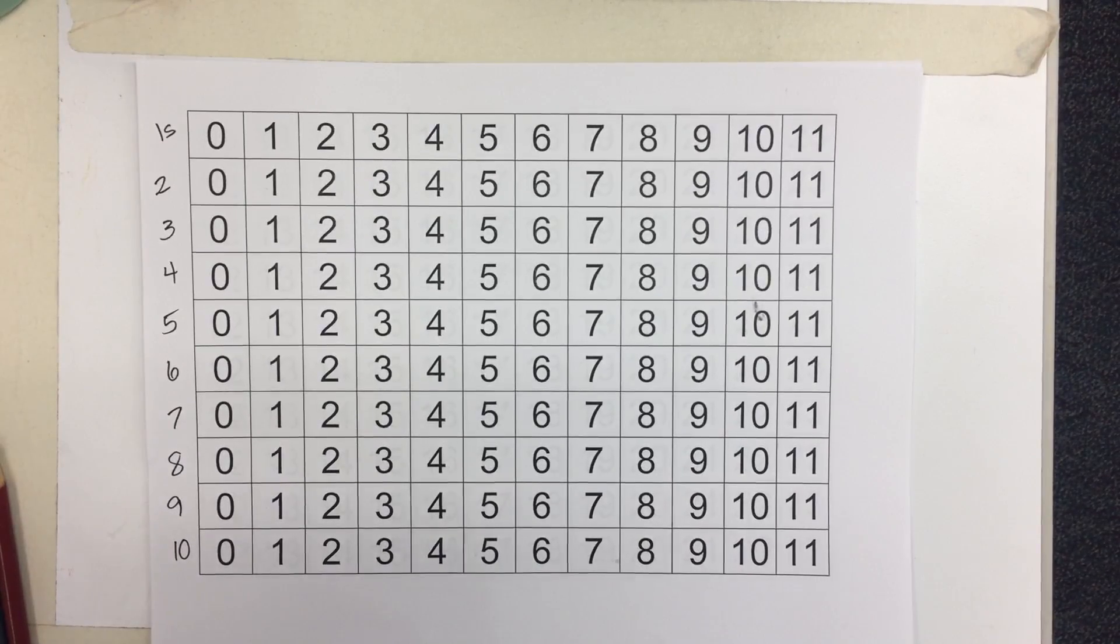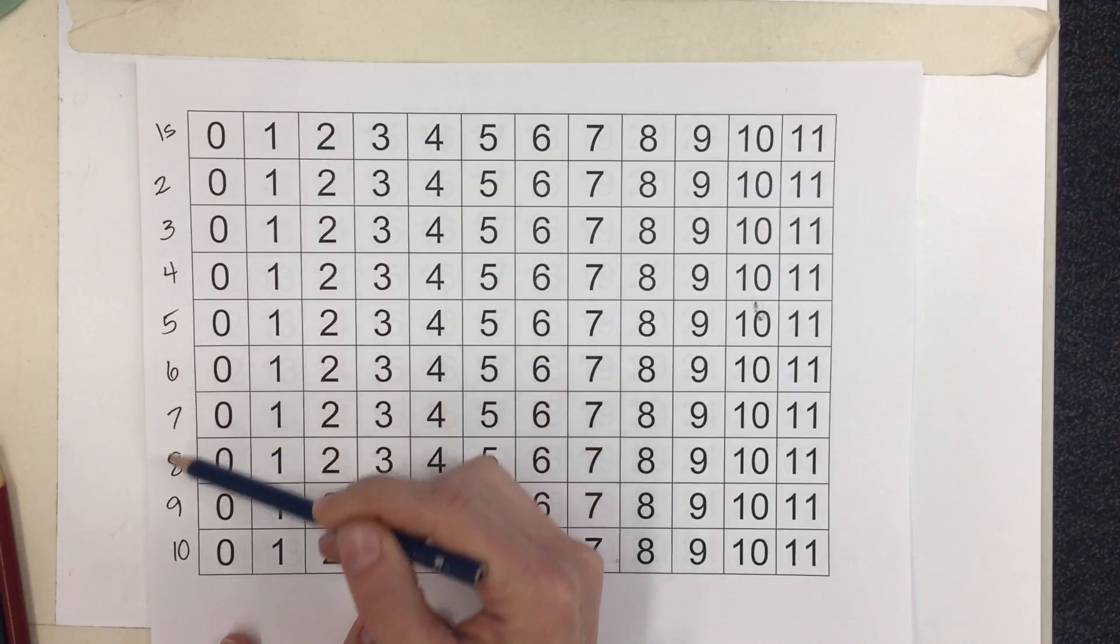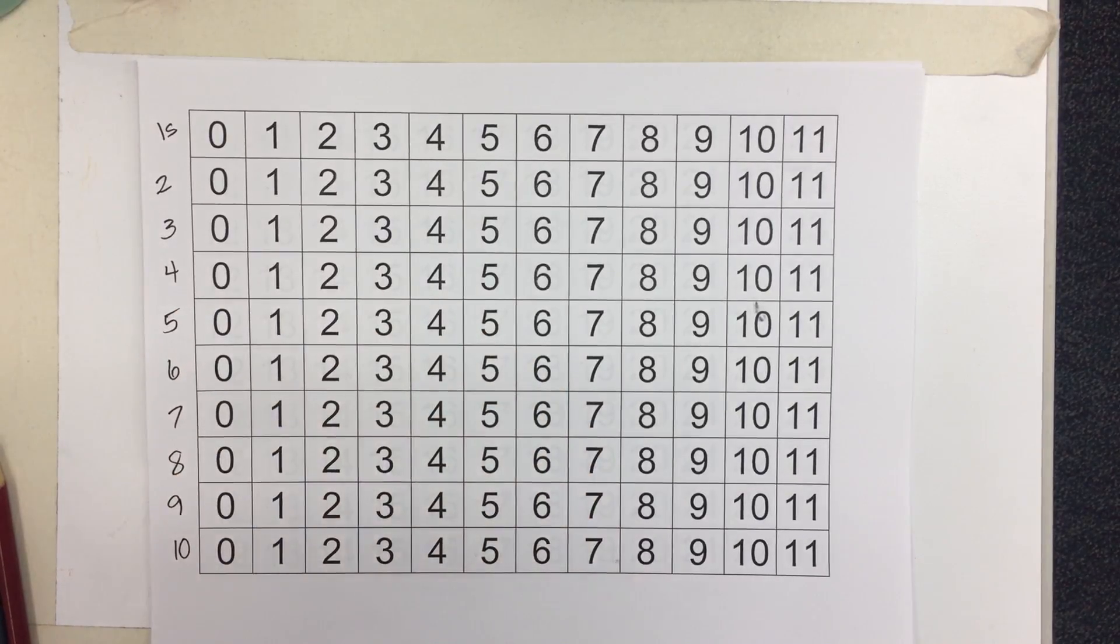Today we are going to be making a multiples chart. It's a little different than a multiplication chart but very related. You want to have your paper out, and you'll want to number each row 1, 2, 3, 4, 5, 6, 7, 8, 9, and 10. You can pause the video to give yourself time to do that.